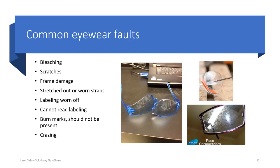Examples of eyewear that should be retired include bleaching from UV exposure, scratches, frame damage, stretched-out straps, and labeling worn off or unreadable. Crazing is a sort of chemical reaction on the coating that also makes eyewear unusable. These are all reasons to retire a pair of eyewear.